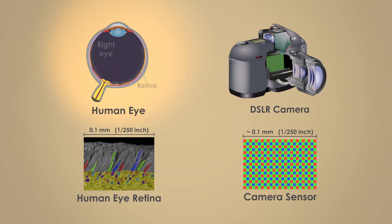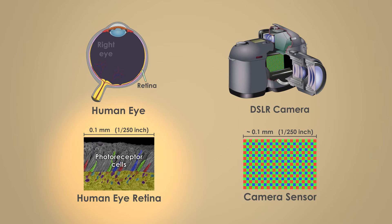In an eye, the surface is the retina, a curved layer of tissue lining the inside of the eye, and the individual elements are called photoreceptor cells.